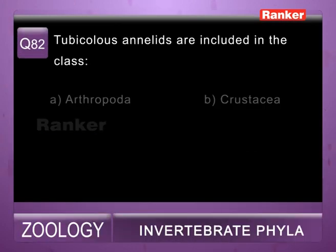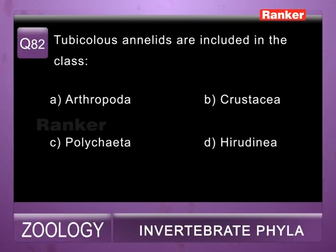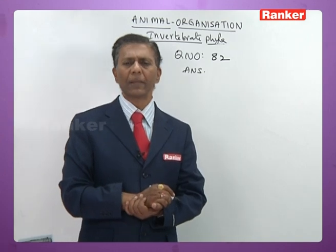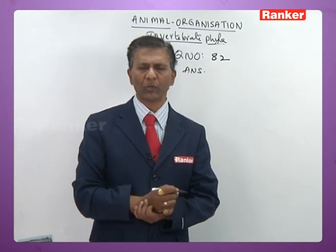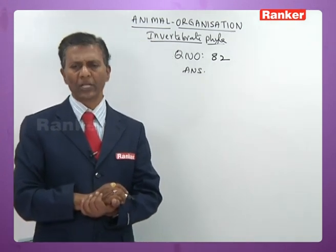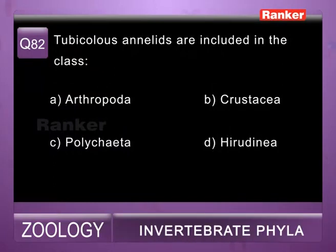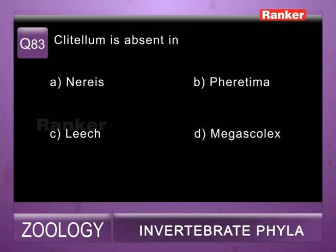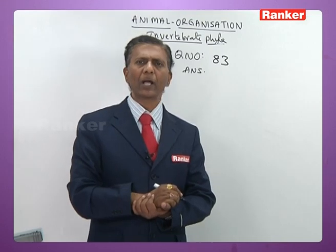Question eighty-two: tube-building annelids are included in class — a) Arthropoda, b) Crustacea, c) Polychaeta, d) Hirudinea. In Polychaeta, tube-building annelids are placed in both Sedentaria and Errantia. So the answer for eighty-second question is c) Polychaeta.